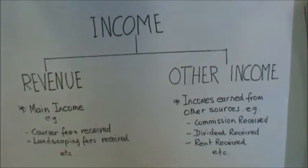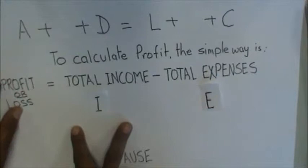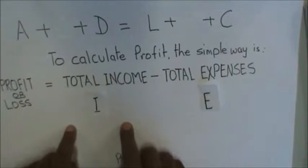So that's the part on income. Income will be reported in two groups: revenue and other income. Adding up both of them gives us the total income. Now, let's have a look at the expenses.